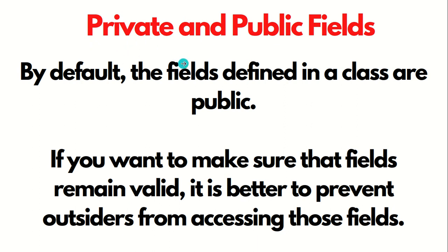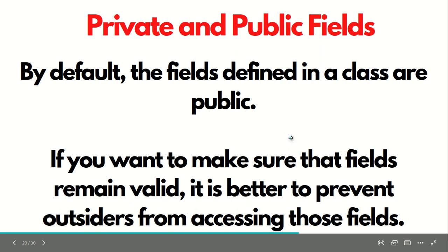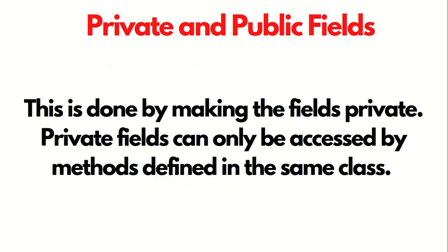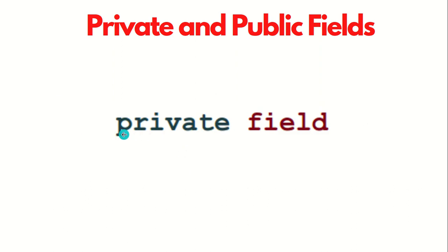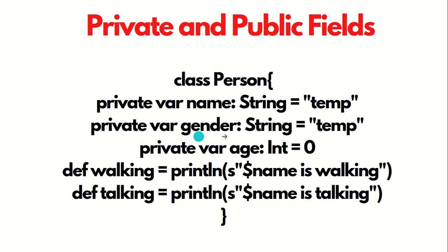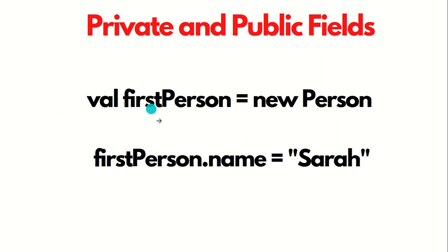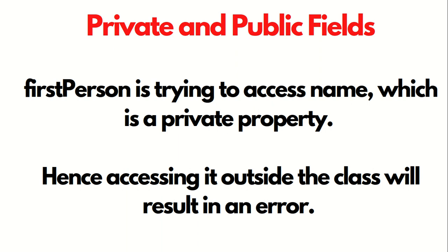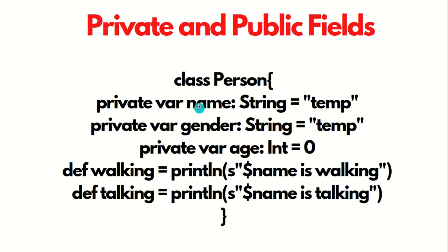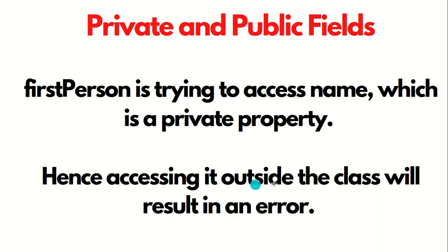What is the meaning of private and public fields? By default, the fields defined in a class are public. If you want to make sure that the fields remain valid, it is better to prevent outsiders from accessing those fields. This is done by making the fields private using the prefix private. Private fields can only be accessed by the methods defined in the same class. In this example, we have prefixed our fields with the private keyword: private name, private gender, and private age. If we create an object firstPerson and try to set firstPerson dot name equal to Sarah, we'll get an error because name is a private property. Accessing it outside of the class will result in an error.